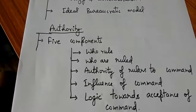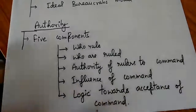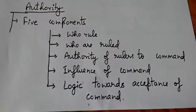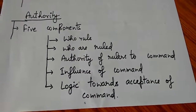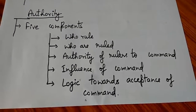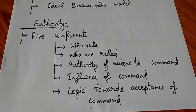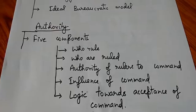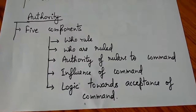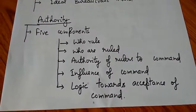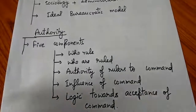Authority has five components: first, who is ruled; second, who are the rulers; third, the authority of rulers to command; fourth, the influence of that command; and fifth, the logic towards acceptance of that command. Authority is derived — there are those who rule and those who are ruled, and commands are accepted because of some rational logic.